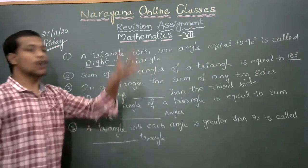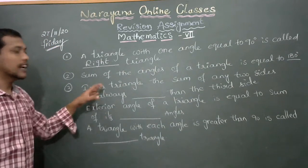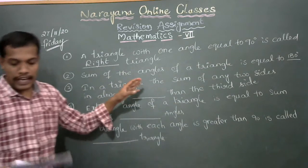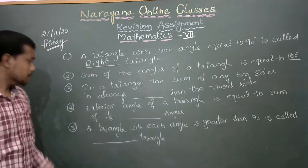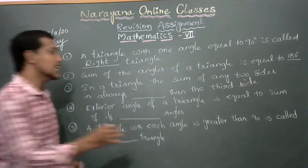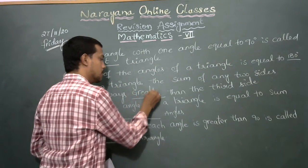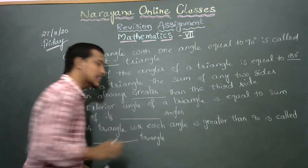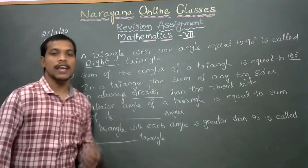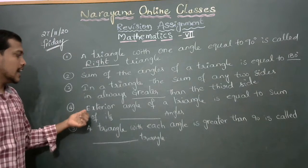Third one: in a triangle, the sum of any two sides is always greater than the third side. I am repeating again — in a triangle, the sum of any two sides is always greater than the third side. Only then can we form a triangle.